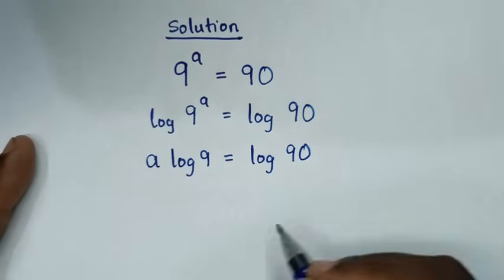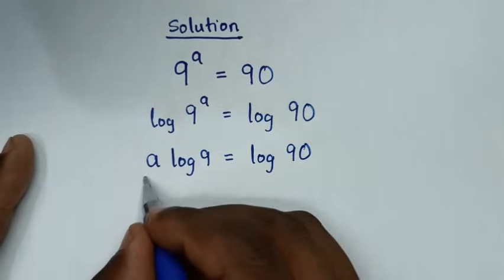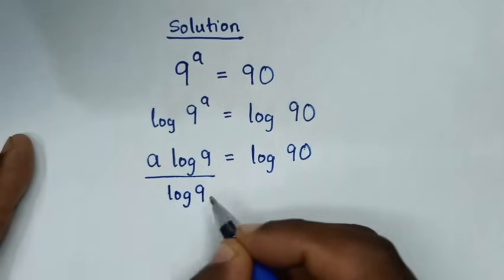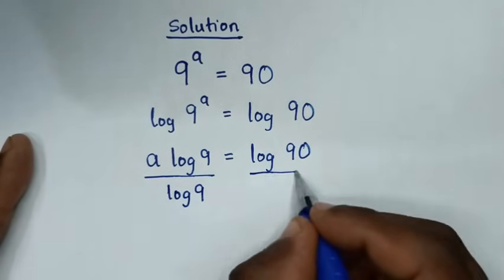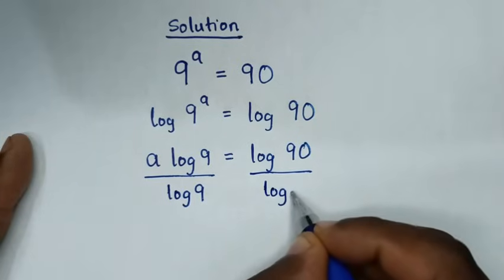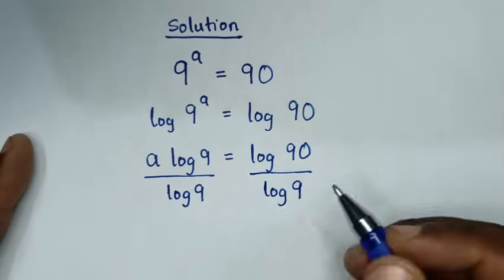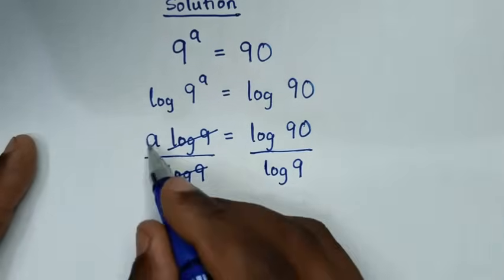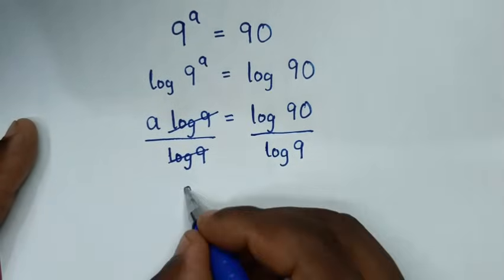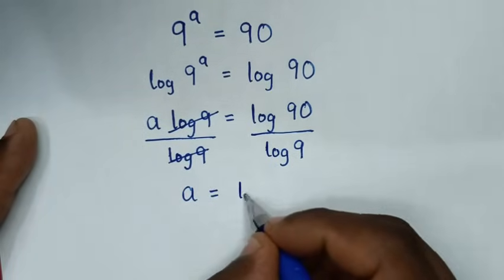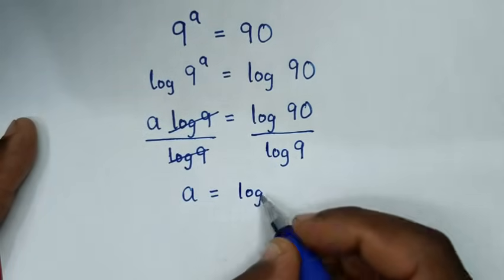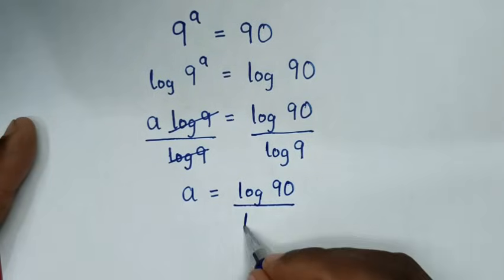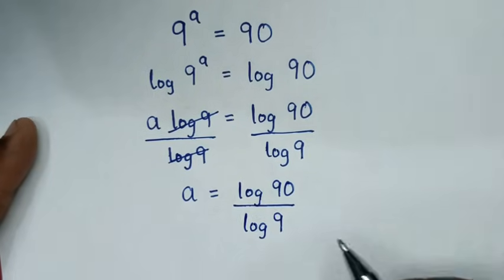Then we'll divide by log of 9 on both sides — log of 9 over log of 9 on the left, and log of 90 over log of 9 on the right. This and this will cancel, so it will be a is equal to log of 90 over log of 9.